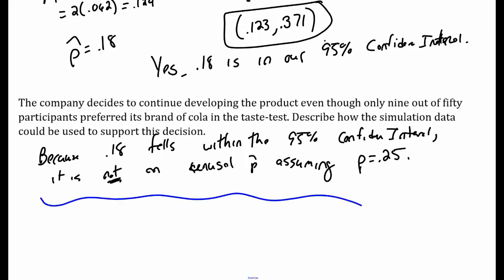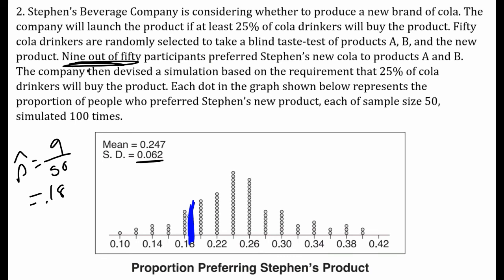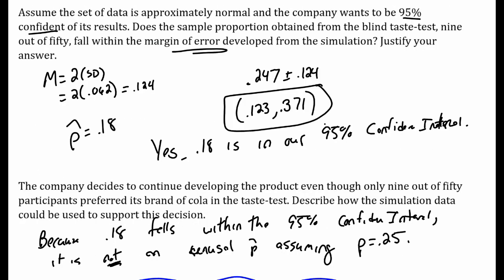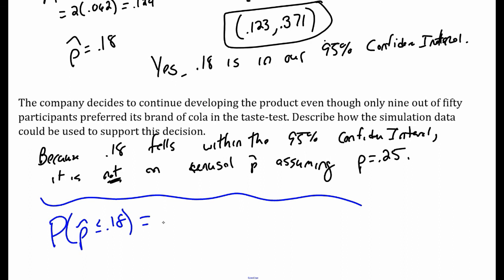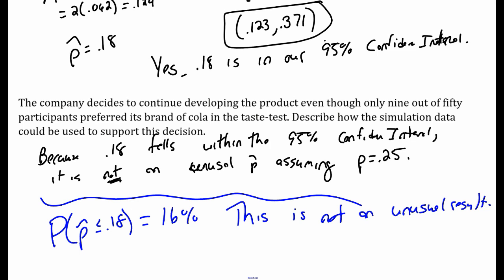The probability of getting a p-hat that's less than or equal to 0.18 was 16 out of 100, so 16%, assuming the true population proportion is 0.25. This is not an unusual result. There's a 16% chance of getting 18% or less for our p-hat, so we don't need to question the 0.25 assumption.